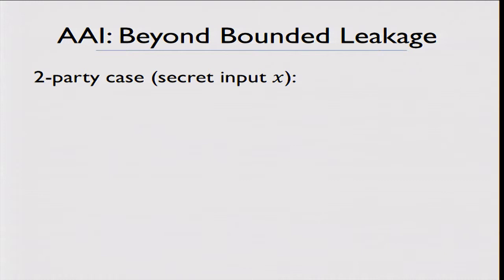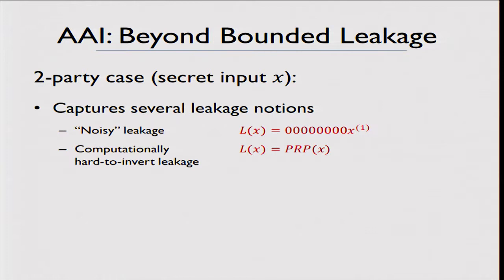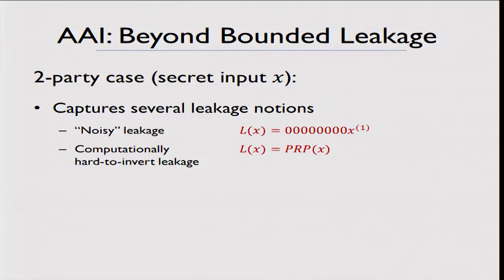This definition goes beyond bounded leakage. In the two-party case with one corrupted party and one secret input x, our definition captures several leakage notions: not just bounded output leakage with a constraint on number of bits, but also bounded entropy or noisy leakage. For example, if the leakage function asked has a bunch of garbage and a small amount of information on the input, what we reveal in the ideal world is the exact same function evaluated on the simulated state — so it's limited to just that small amount of information. Similarly for computationally hard-to-invert functions.